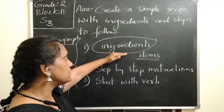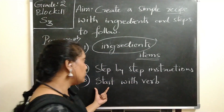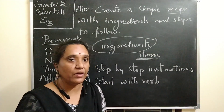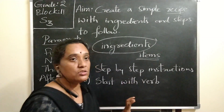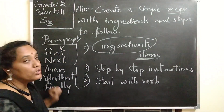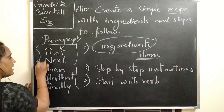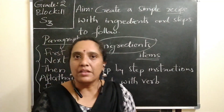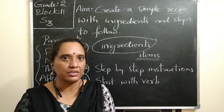So using ingredients and step-by-step instructions — if you want to write a command, you use the verb; if you want to write it in a paragraph, you use the order words like 'first,' 'next,' 'then,' 'after that,' and 'finally.' Now we are going to prepare a recipe.